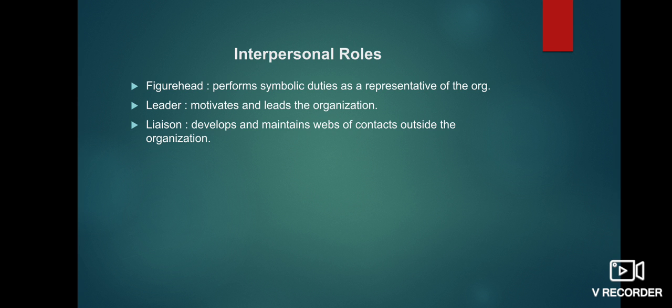The third interpersonal role is liaison. Liaison basically acts as a connecting link — like a mediator. The liaison develops and maintains a web of contacts outside the organization, because no organization can perform in isolation. The organization has to deal with the outside world as well. So the liaison builds and maintains relationships both inside and outside the organization.